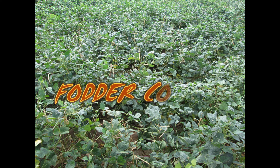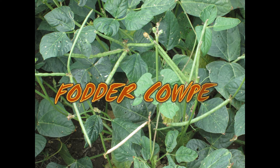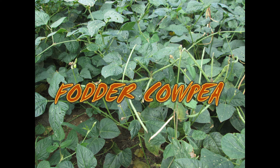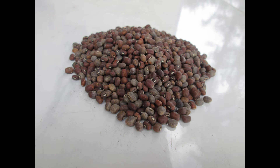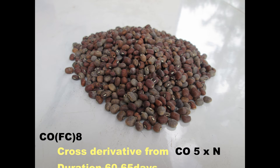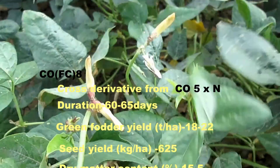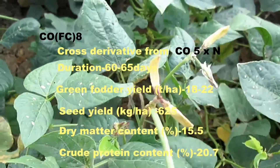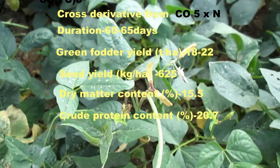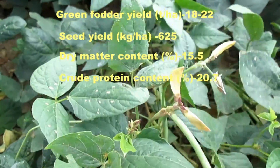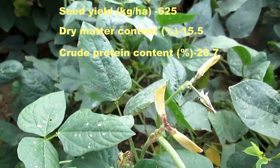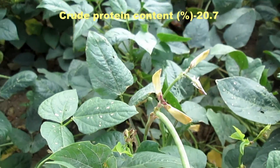Forage Cowpea variety is CoFC8, grown in June-July as an irrigated crop. Green fodder yield is 20 to 30 tons per hectare in irrigated conditions and 10 to 15 tons per hectare in rain-fed conditions. CoFC8 is a cross derivative of Co5 and N, with duration of 60 to 65 days, green fodder yield of 18 to 22 tons per hectare, seed yield of 625 kg per hectare, dry matter content of 15.5%, and crude protein content of 20.7%.